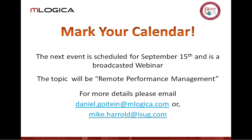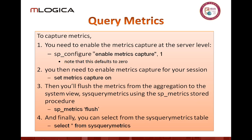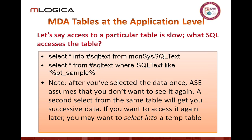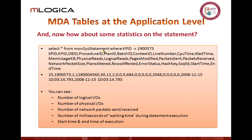A question asks how to find the program running the longest during a particular time interval, and which MDA tables can be used. Keep in mind that the query running the longest is not necessarily the one causing the most problems. From the MonSys statement you can get start time and end time. If all you care about is what ran the longest, you subtract the start time from the end time and whatever has the biggest range gives you your answer. But that may not be your biggest problem.